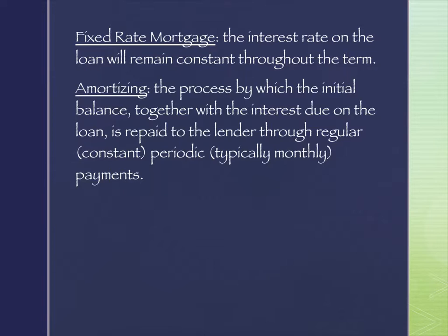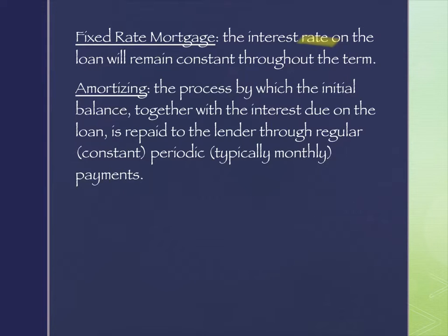We are first going to talk about a fixed-rate mortgage. In a fixed-rate mortgage, the interest rate is fixed — it's the rate of the interest that's fixed, and it stays constant the entire length of the loan. That's what fixed-rate means: the rate doesn't change. There are loans where the rate does change, and we'll talk about them at the end.